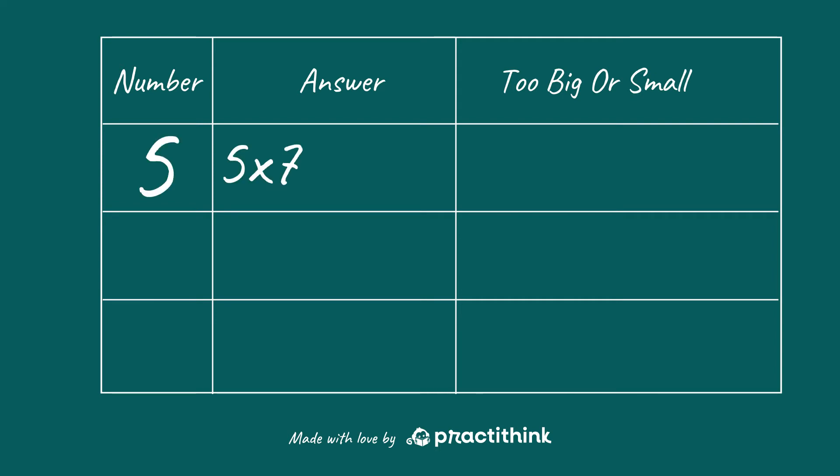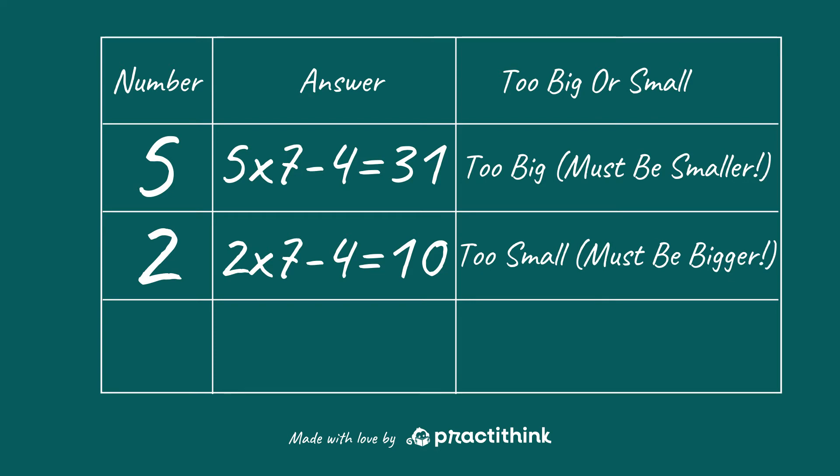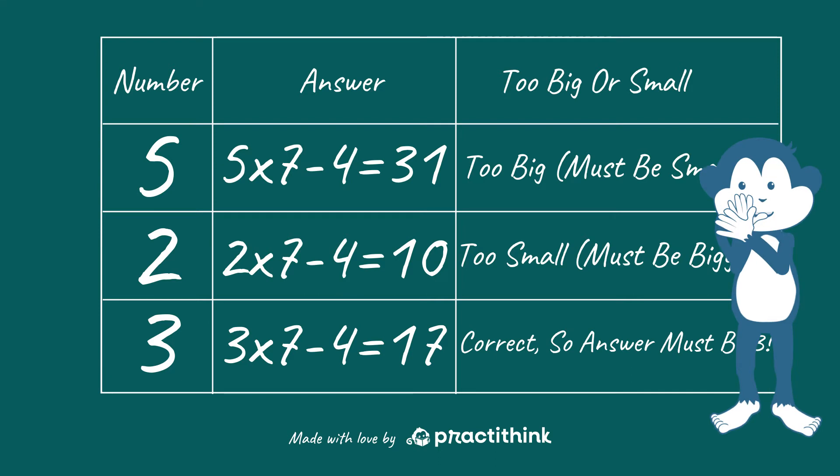5 times 7 minus 4 is 31. Hmm, that's too big. We're looking for 17. Let's try 2. 2 times 7 minus 4 is 10. That's too small. Okay, so 5 is too big and 2 is too small. We need something in the middle. Let's try 3. 3 times 7 minus 4 is 17. Yes, we did it!